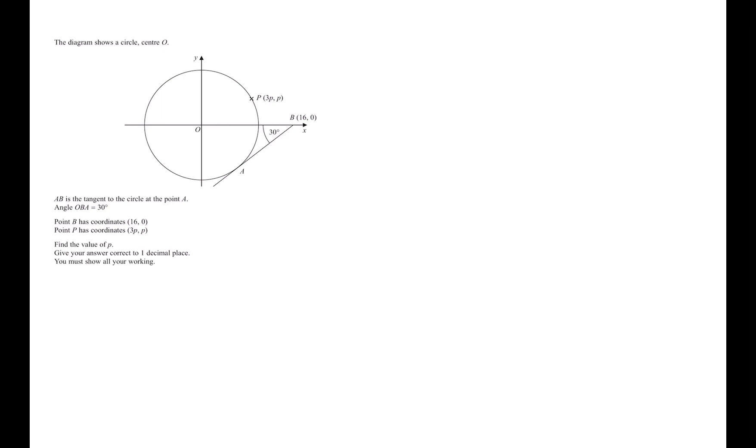Here's the first question. In this question we have a circle and there's a tangent to it, AB. It's a tangent to the circle. We have angle OBA given as 30 degrees, the point B has coordinates 16, 0. Point P lies on the circle with coordinates 3P and P, and we are told to find the value of P to one decimal place. First, whenever we see a tangent meeting a circle, remember our circle theorems - they will always meet at a right angle.